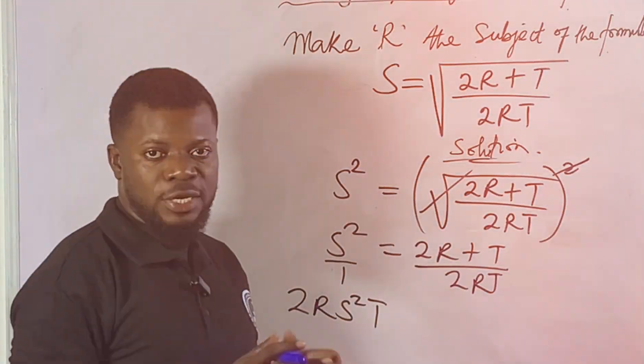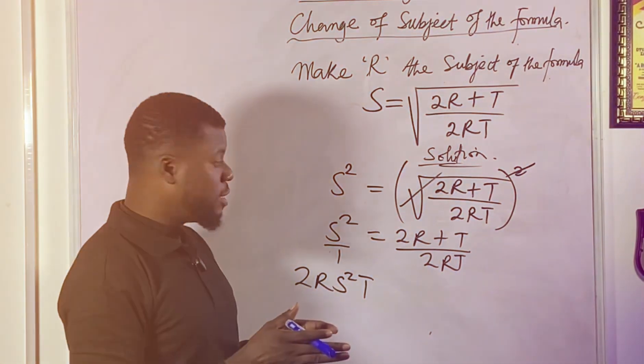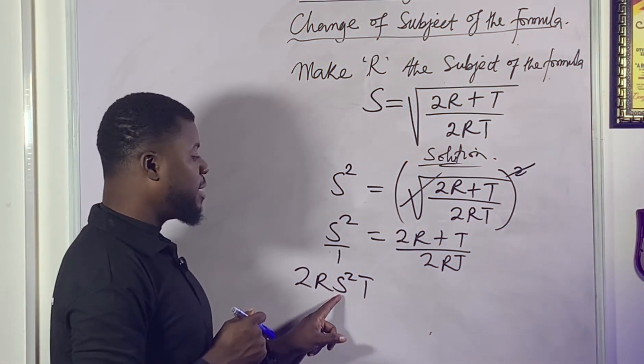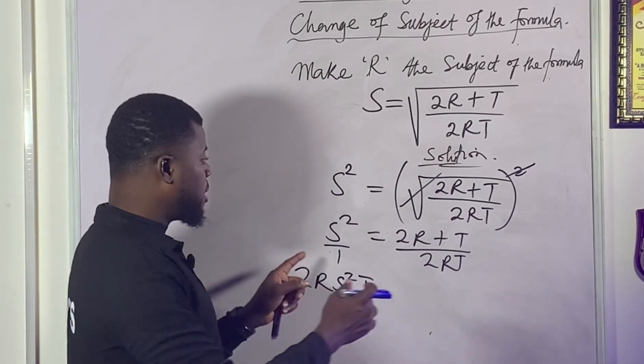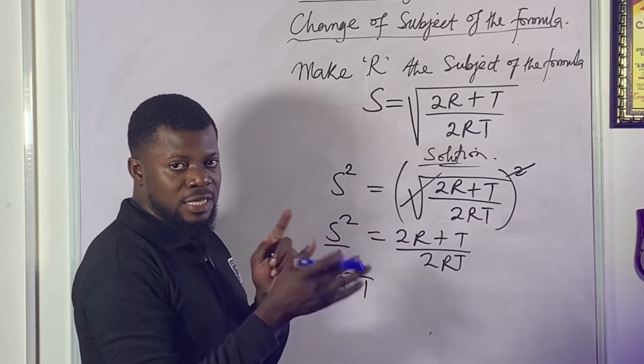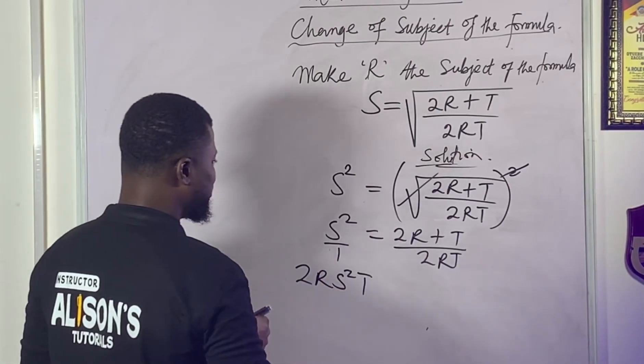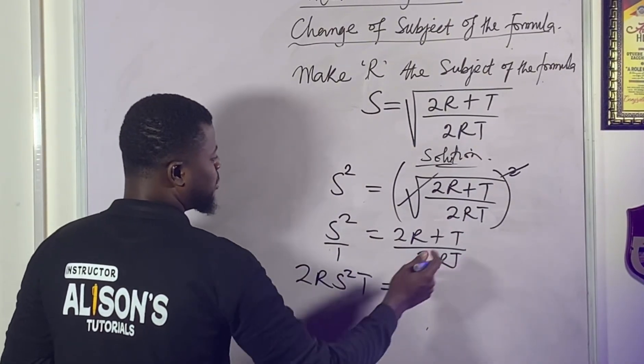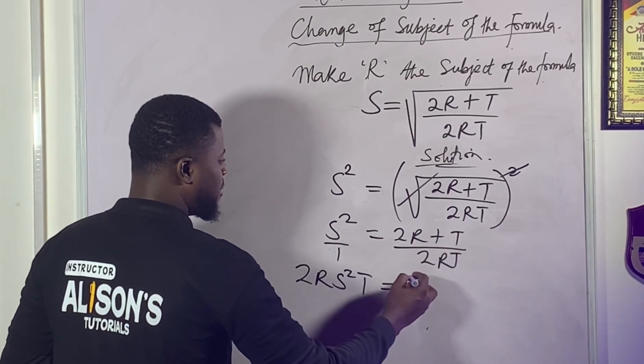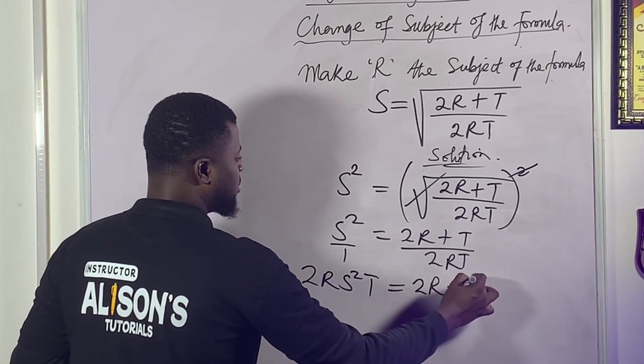I'm just trying to follow - it doesn't matter if you write 2RT then S squared. I'm just trying to follow the alphabetical order because we have R, you have S, you have T. As long as they are multiplying, they can switch at any point in time. So what do we need to do on this other part? One multiplied by 2R plus T, we have 2R plus T.